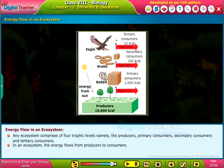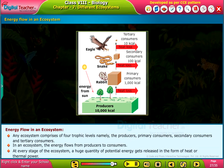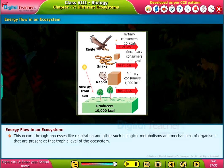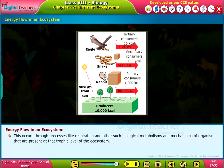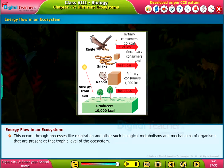In an ecosystem, the energy flows from producers to consumers. At every stage of the ecosystem, a huge quantity of potential energy gets released in the form of heat or thermal energy. This occurs through processes like respiration and other biological metabolisms and mechanisms of organisms present at each trophic level.